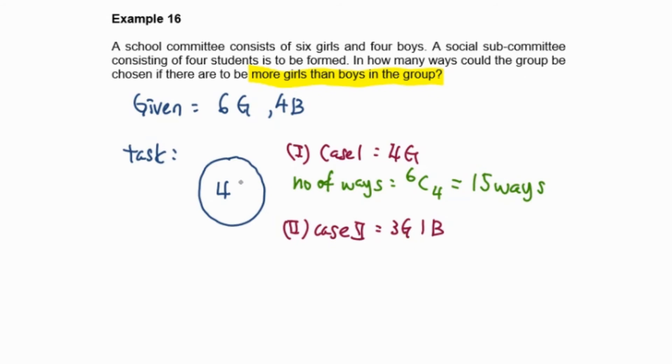Now we are going to do Case 2 where we're going to choose three girls and one boy for this group. Therefore the number of ways will equal to 6 choose 3 times 4 choose 1, so this one will be equal to 80 ways.